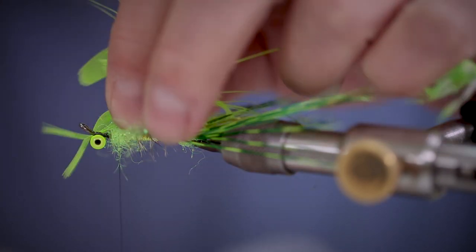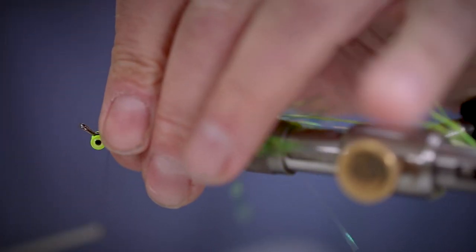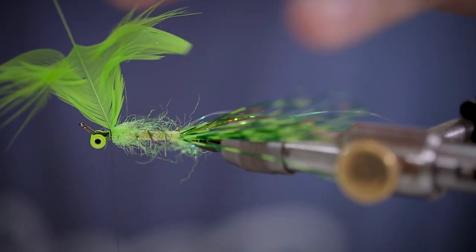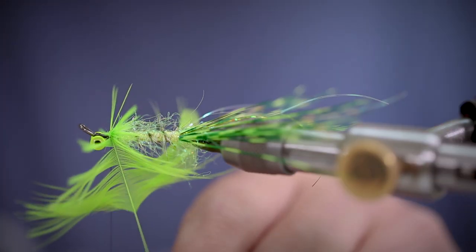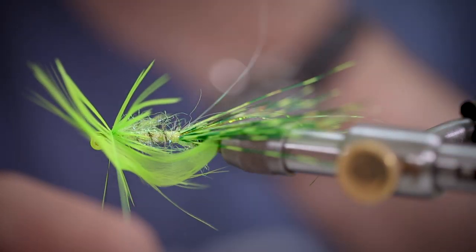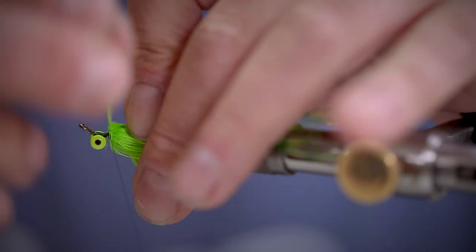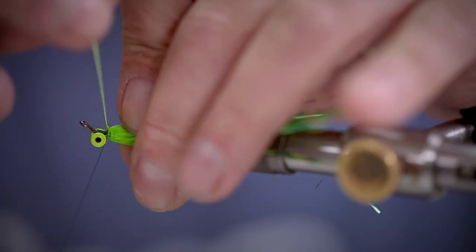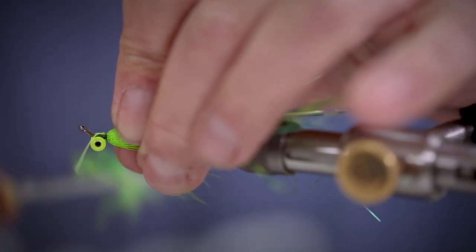Next, we're tying in a soft Chartres hen hackle. Three to four turns until you're happy with the fibre content. And tie it down nice and securely, pulling the stem through gently if you feel it's going to be a little stronger and then trim away the waste.